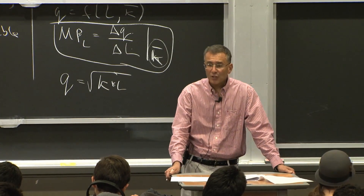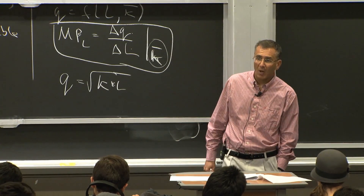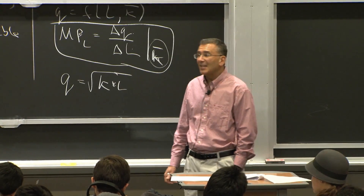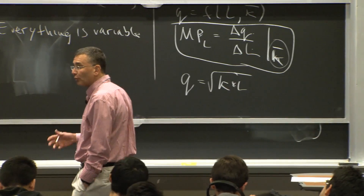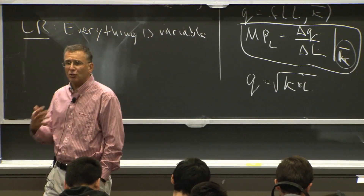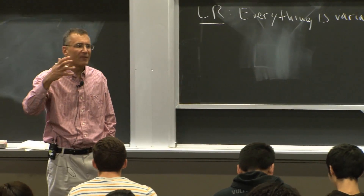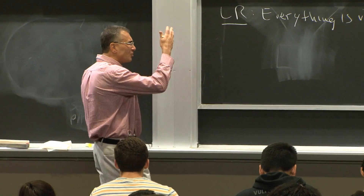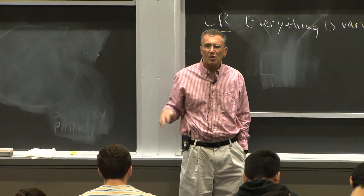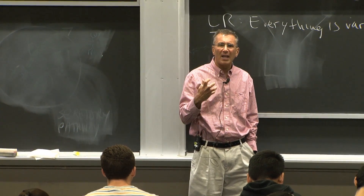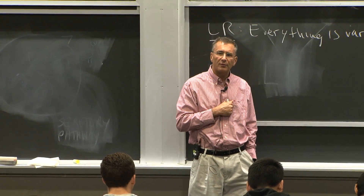What determines the slope of the isoquant is very similar to what determines the slope of the indifference curve. What determines whether indifference curves are steep or shallow? What fundamental underlying concept determines the shape of the indifference curve?